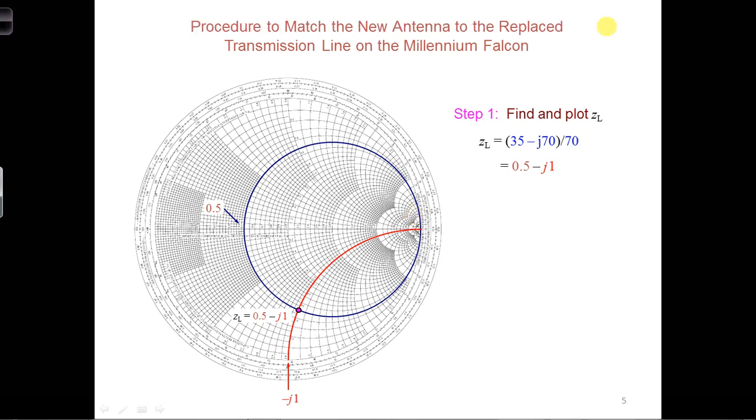The normalized impedance on the Smith chart is at the center. That is where the imaginary part is zero and the real part is one. So then we end up with Z_in equal to one.